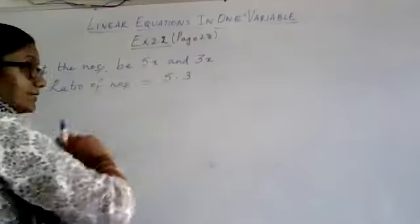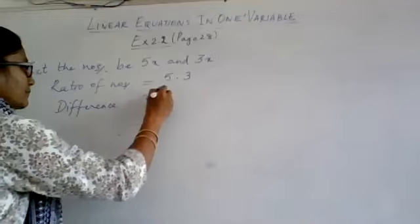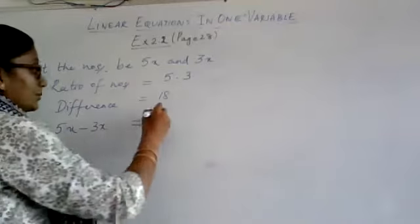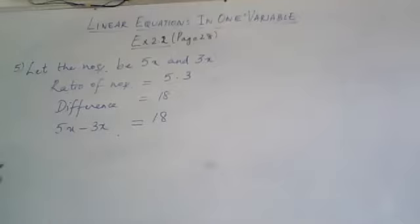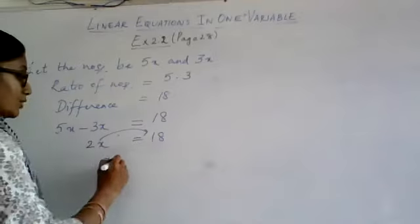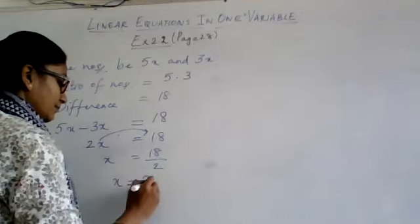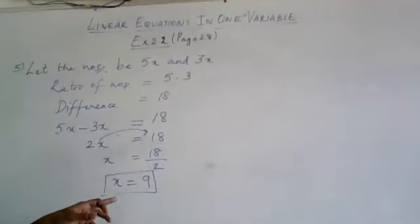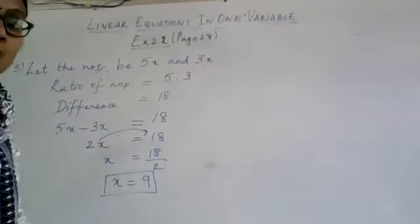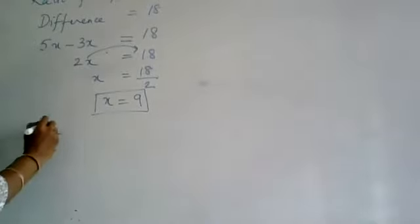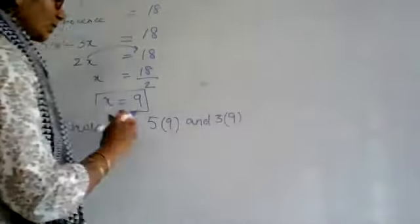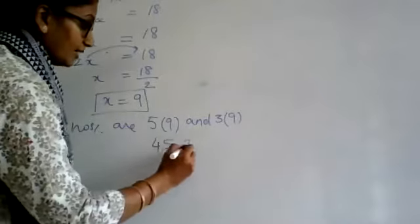Now the difference between the two numbers is given as 18. So subtracting 3x from 5x I should get 18. I have framed an equation in one variable: 5x minus 3x equals 2x equals 18. Transposing the 2, x becomes 9. Now is x my number? No — the numbers are 5 times x and 3 times x. So the numbers are 5 into 9 and 3 times 9 — since x is 9, the numbers are 45 and 27.